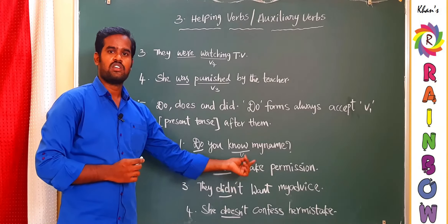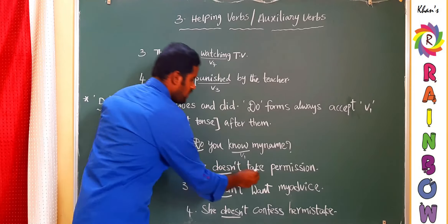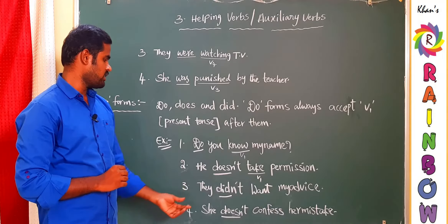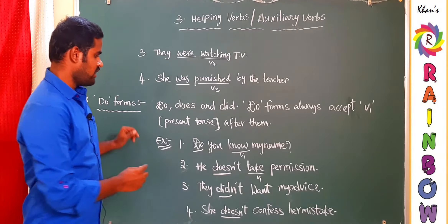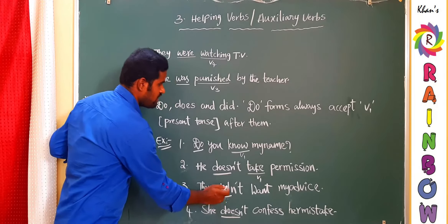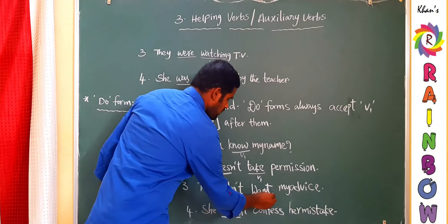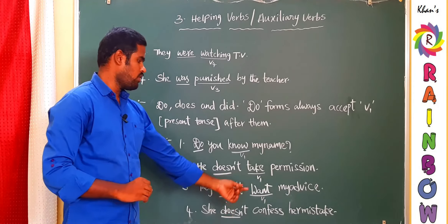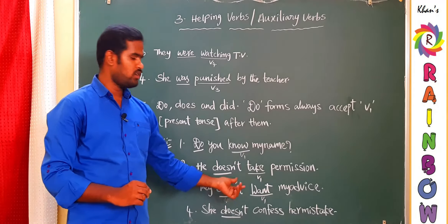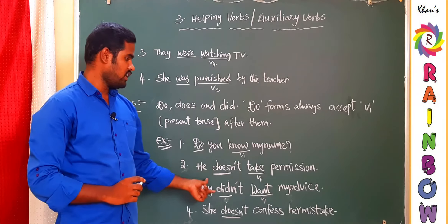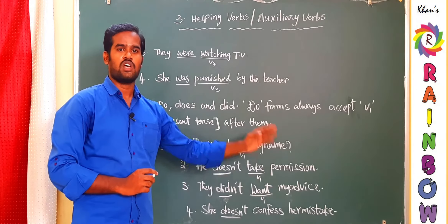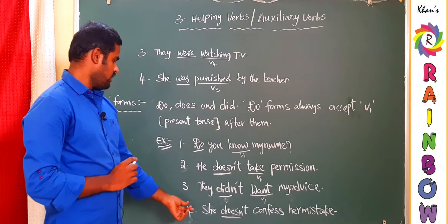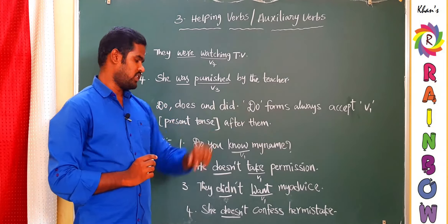Third example: 'They didn't want my advice.' Here 'did' is the past tense Do-form, and 'want' is V1. You might think that since 'did' is past tense you should use V2, but the rule is: a sentence must contain only one past tense. 'Did' is already past tense, so we should not add another past tense — we use V1. Fourth example: 'She doesn't confess her mistake' — same rule as example two, 'does' with V1.